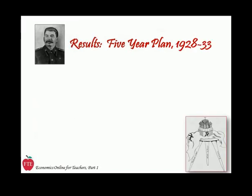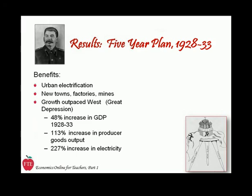Stalin's Five-Year Plan was successful in terms of his goals of industrialization and military buildup, and also in terms of the moral-cultural leg of the stool analogy. During the period of 1928 to 1933, the evidence of progress became increasingly visible: large cities had electricity, factories sprang up, people were moved to cities to work, and whole new towns were built to supply factories with coal, steel, and other raw materials. At a time when the rest of the world was slipping into catastrophic depression, the Soviet economy posted 48% growth by the end of the plan in 1933 — an almost 10% annual growth rate. Producer goods output grew by 113%, and electrical generation by 227%.